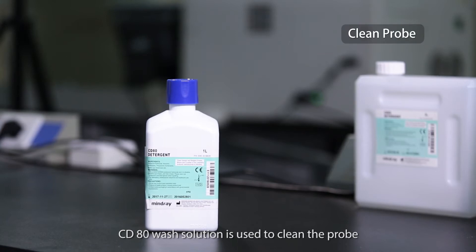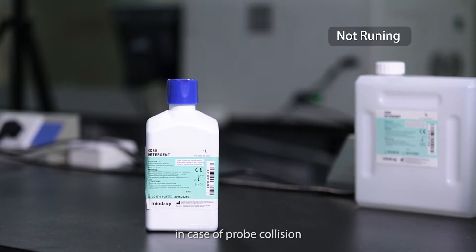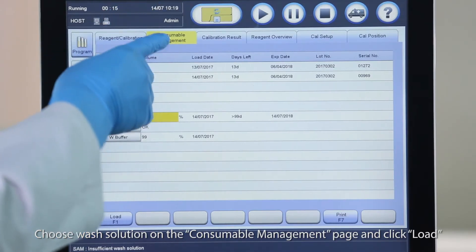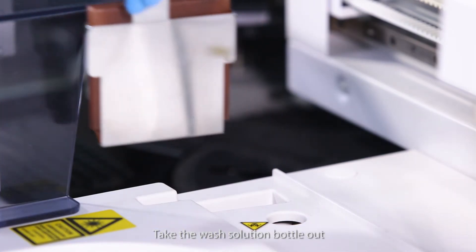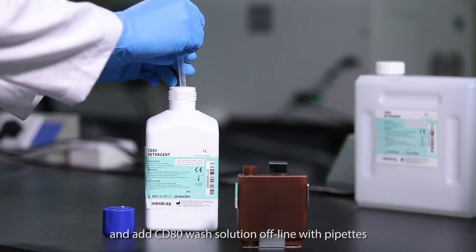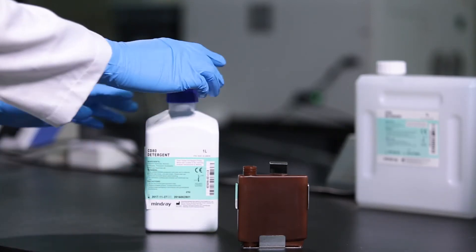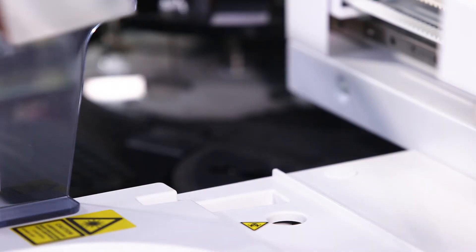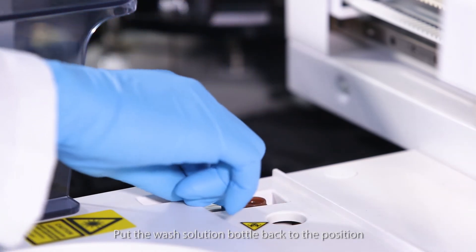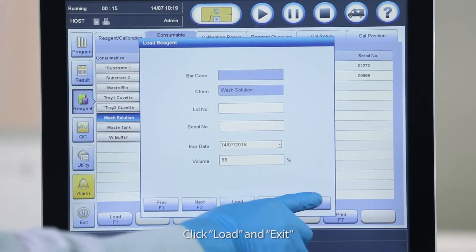CD80 wash solution is used to clean the probe. If the wash solution is used up, you can replenish the bottle when the system is not running in case of probe collision. Choose wash solution on the consumable management page and click load. Take the wash solution bottle out and add CD80 wash solution offline with pipettes. Do not add when bottle is still on the machine. Enter the following information: volume and expiration date. Put the wash solution bottle back to the position. Please make sure it will not block the probe movement. Click load and exit.